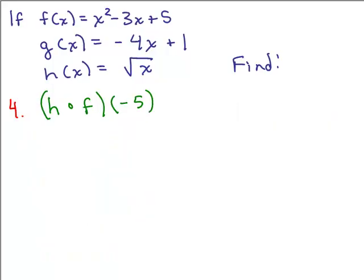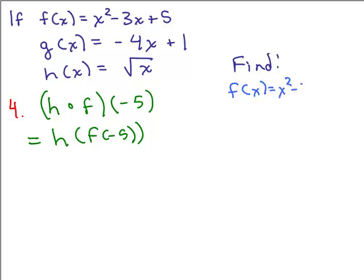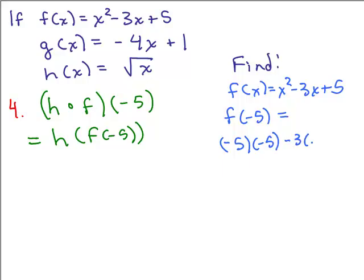Let's do some more. How do we compute h of f of negative 5? This means h of f of negative 5. Going to the side to figure out f of negative 5: f of x equals x squared minus 3x plus 5, so we plug in negative 5 for x. That's negative 5 times negative 5 minus 3 times negative 5 plus 5, which gives 25 plus 15 plus 5, or 45.